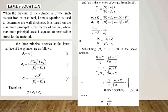In this session, we have seen the thick and thin cylinders and Lame's equation to calculate the wall thickness of the cylinder. In the next session, we will see the Clavarino and Birnie equation, which is used for ductile materials of the cylinder such as mild steel or alloy steels. Thank you.